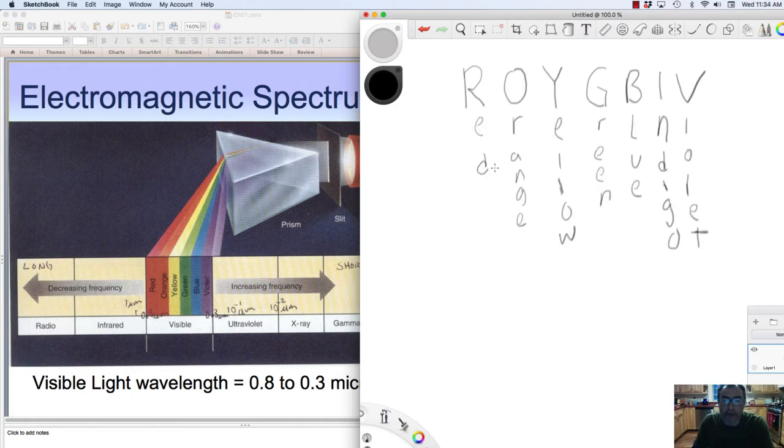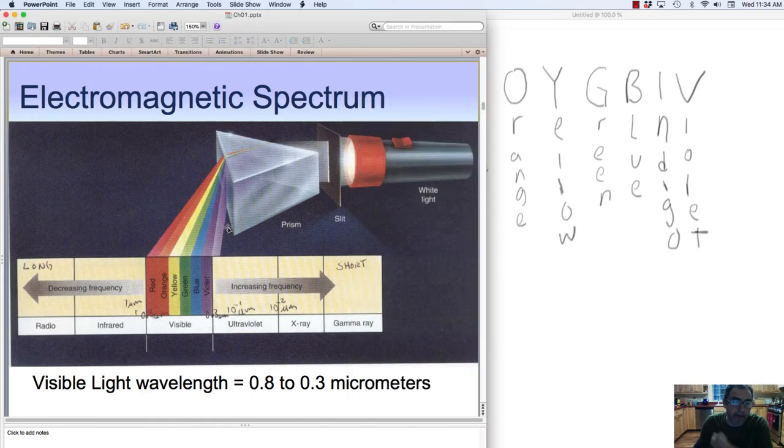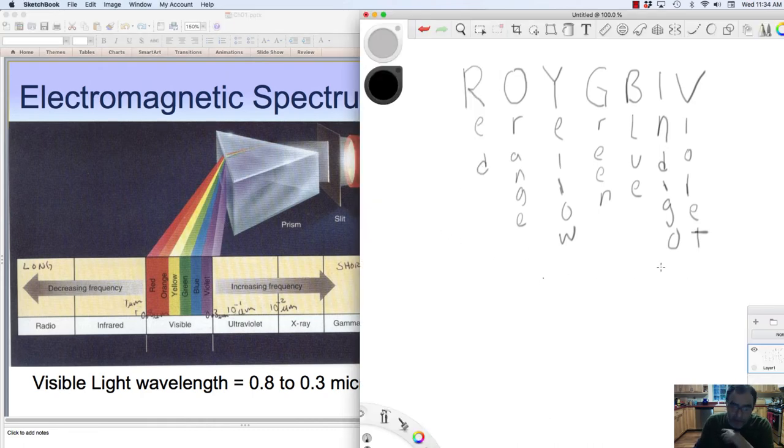...red, orange, yellow, green, blue, indigo, and violet. And we see them right here on this PowerPoint slide. But note that the red end of the spectrum, this is going to be the longer wavelength...